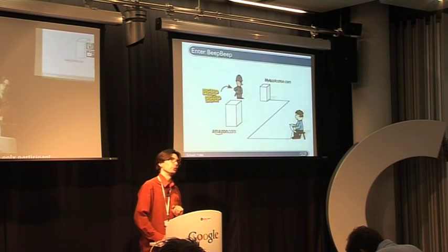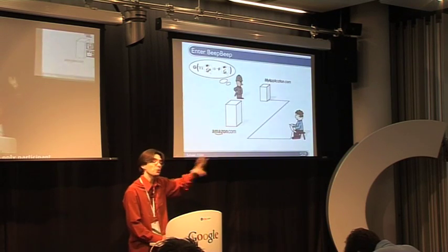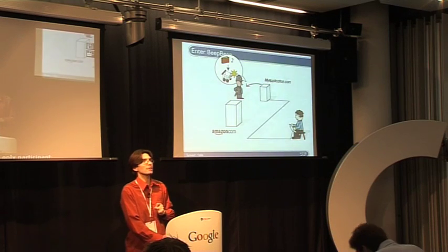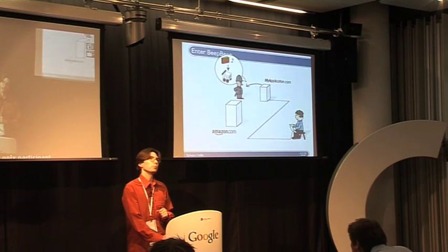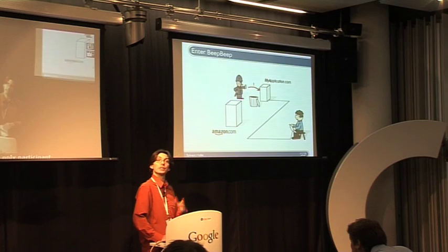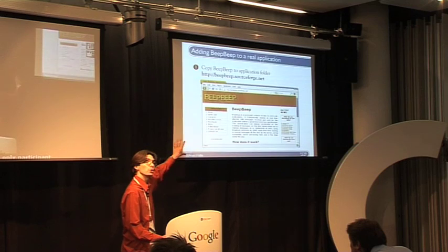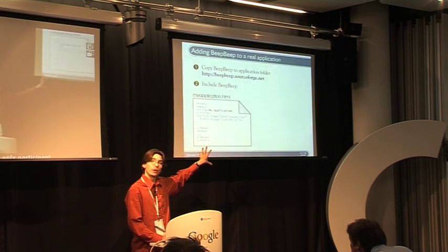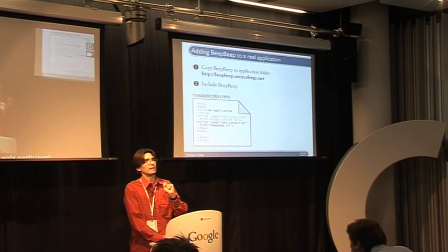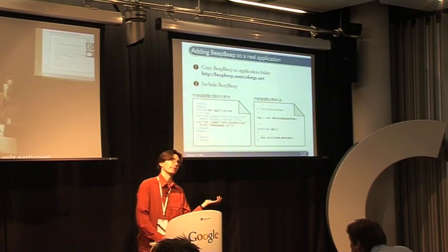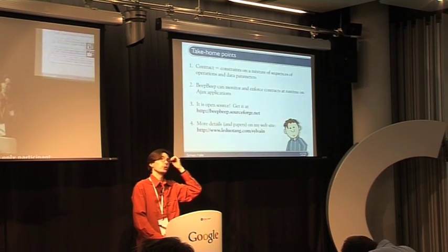Beep Beep is a tool we produced. It acts as a kind of policeman — it holds in memory the contract it has to monitor. When the application tries to send messages, if it's okay it relays them as expected; if not, it will block the message, throw it away, and notify the application about the error. To add this monitor to a real application, you just need two modifications: include a JavaScript file in your HTML code, and call our monitoring class in your JavaScript. That's it. Then you have a contract file that defines what properties the monitor should validate.